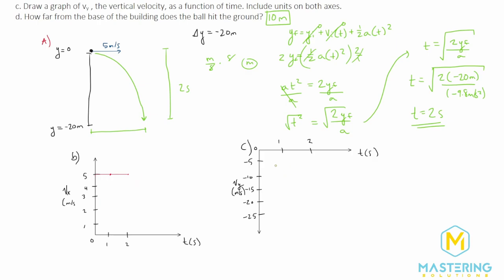To draw the graph for part C, the y component of velocity, we use the acceleration formula. Acceleration equals change in velocity over change in time, so isolating velocity gives: velocity equals acceleration times time. The y component is in free fall, so acceleration is negative 9.8 meters per second squared. Plugging in: at 1 second the velocity is negative 9.8 m/s, and at 2 seconds it is 2 times negative 9.8, which is negative 19.6 m/s.